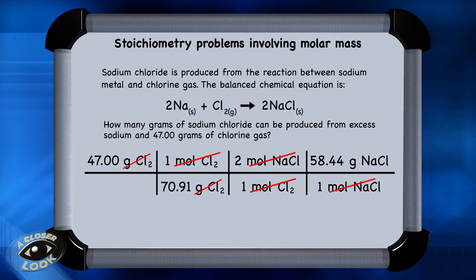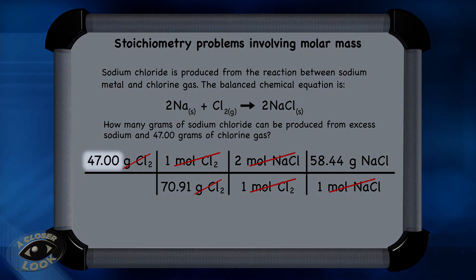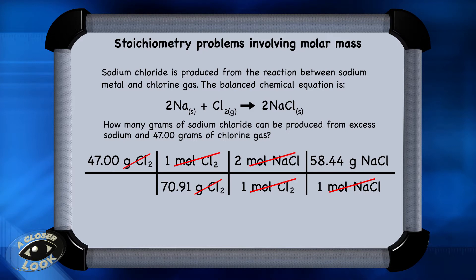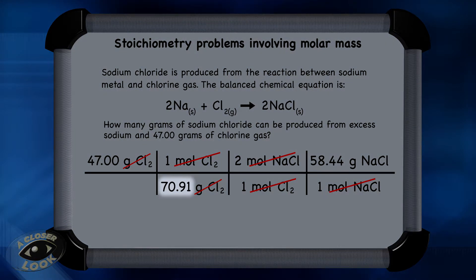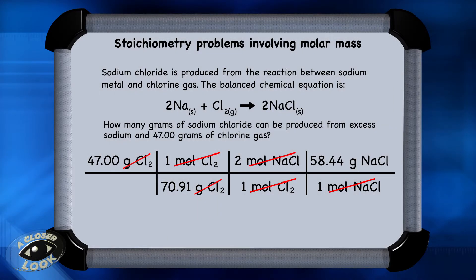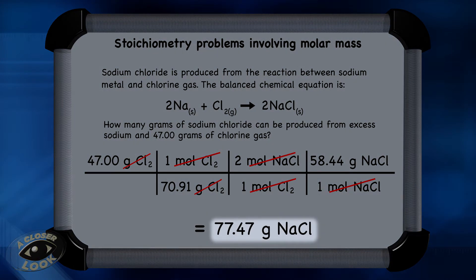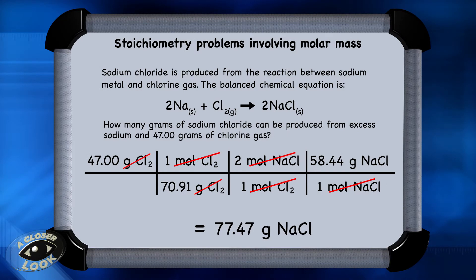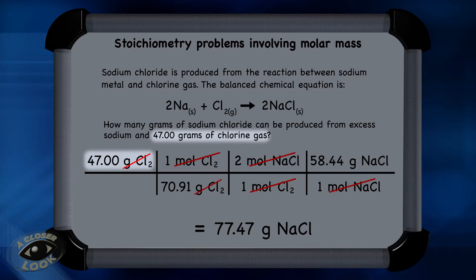You're done converting. Multiply 47.00 times 1 times 2 times 58.44 in the numerator, and divide by 70.91 times 1 times 1. When you do that math, you get 77.47 grams of sodium chloride — that is how much sodium chloride can be produced if you use 47.00 grams of chlorine gas.